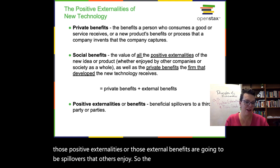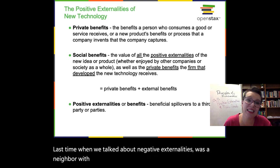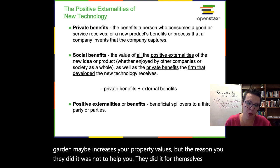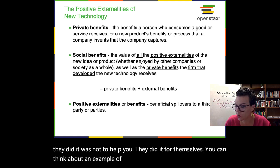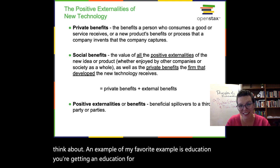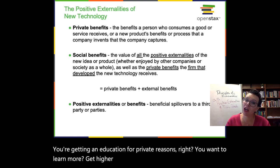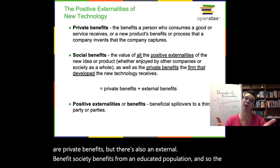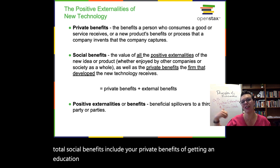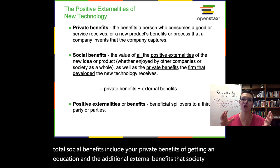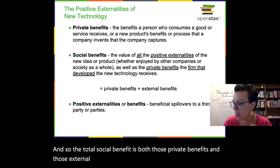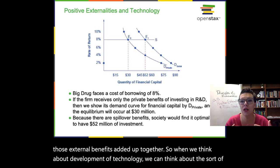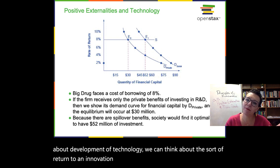An example I gave when we talked about negative externalities was a neighbor with a beautiful garden — you get to see their beautiful garden, maybe it increases your property values, but the reason they did it was not to help you. My favorite example is education: you're getting an education for private reasons — you want to learn more, get higher wages, get a better job. Those are private benefits. But there's also an external benefit: society benefits from an educated population. The total social benefits include your private benefits of getting an education and the additional external benefits that society realizes.